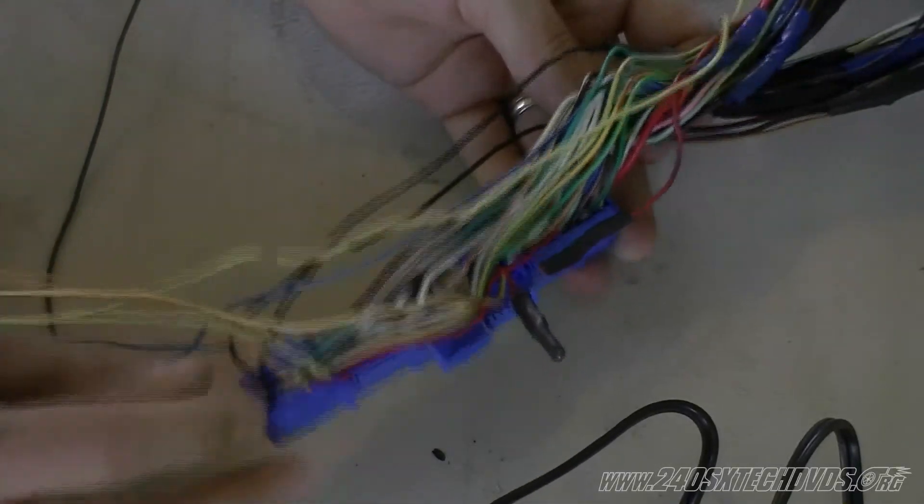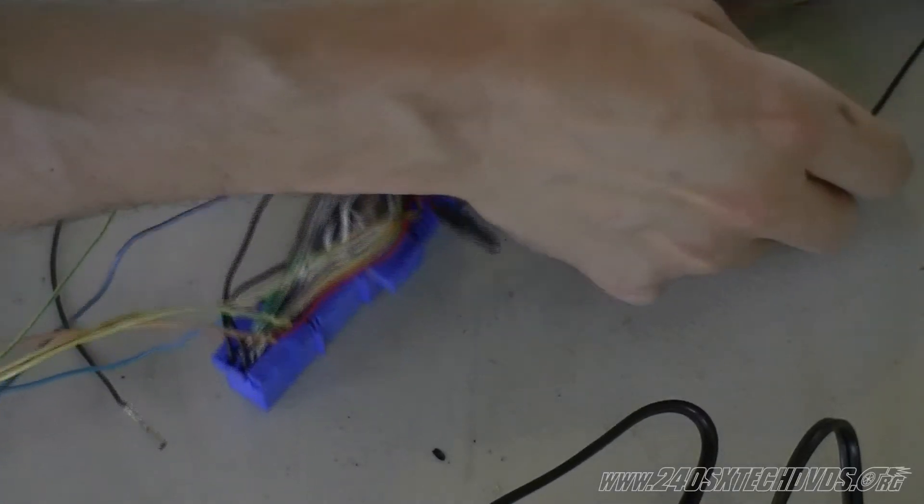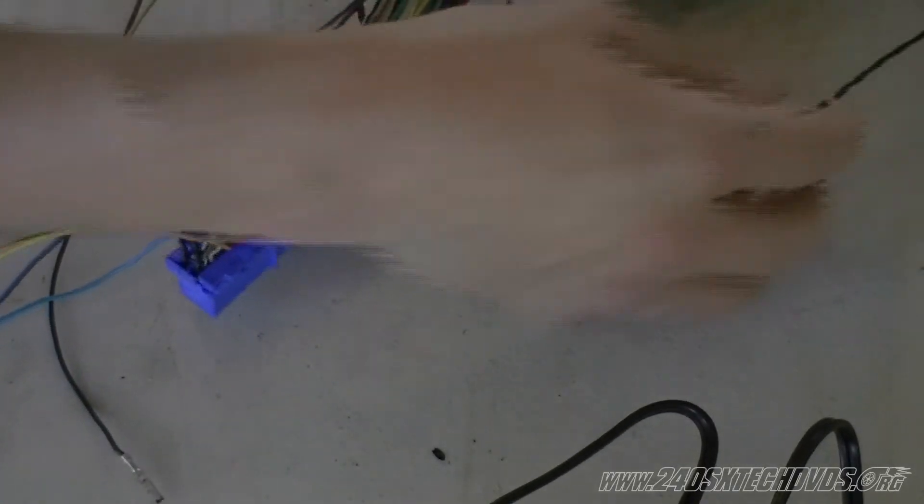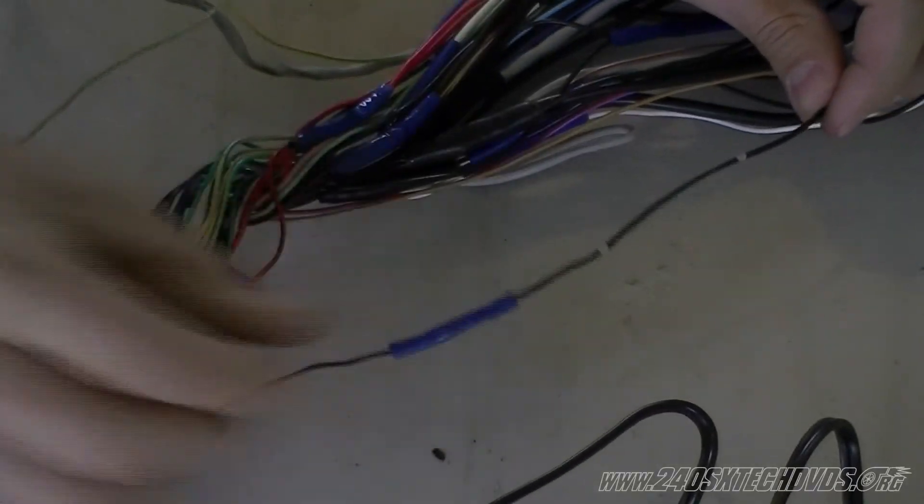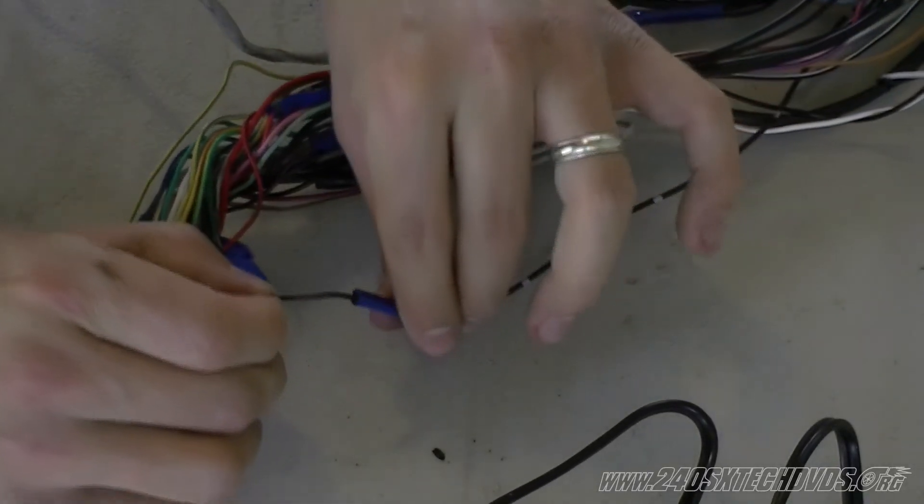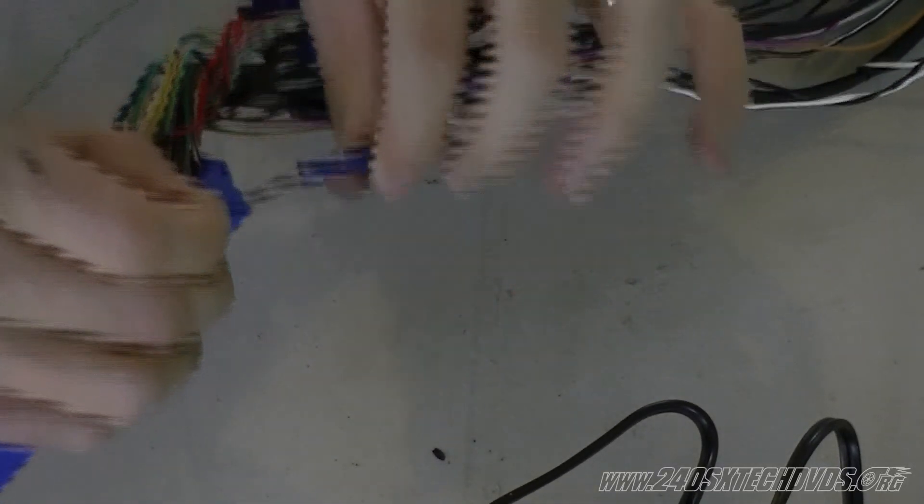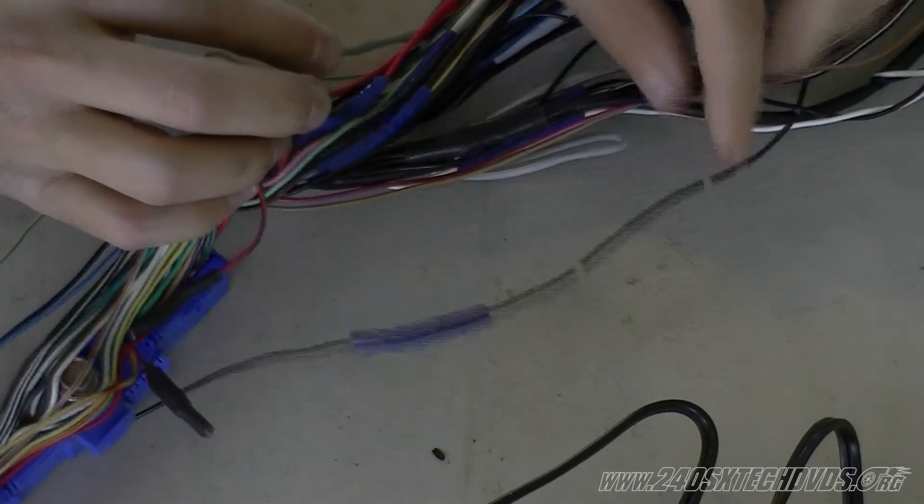And then we'll just trace it down the harness. Where it pulls out right here. As you see, this is a factory where they already had something connected here. But we're going to cut and splice on this one here.